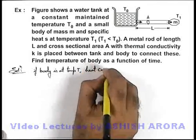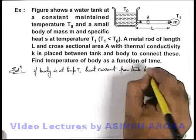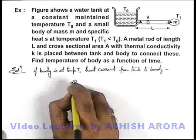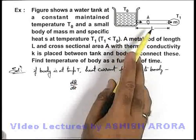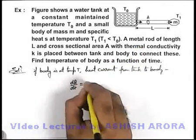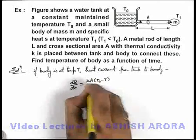Heat current from tank to body can be given as dQ/dt. Here we are just assuming that this rod is having negligible heat capacity and it is always considered to be in a steady state. So here dQ/dt can be written as kA(T₀ - T)/L.